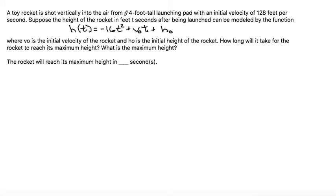Suppose the height of the rocket in feet, t seconds after being launched, can be modeled by the function h(t) = -16t² + v₀t + h₀, where v₀ is the initial velocity of the rocket and h₀ is the initial height of the rocket.